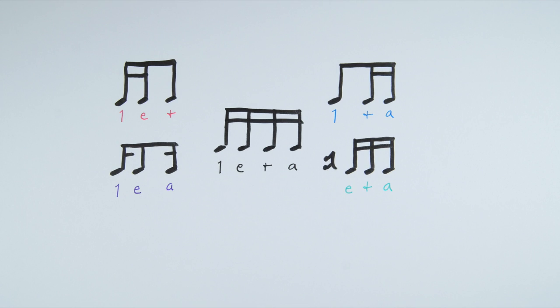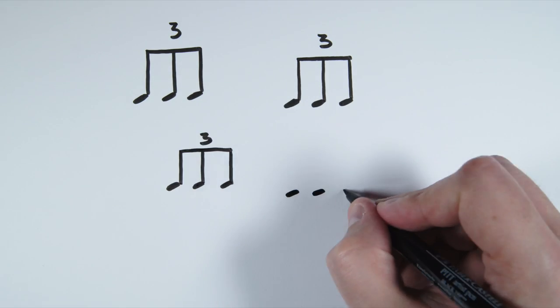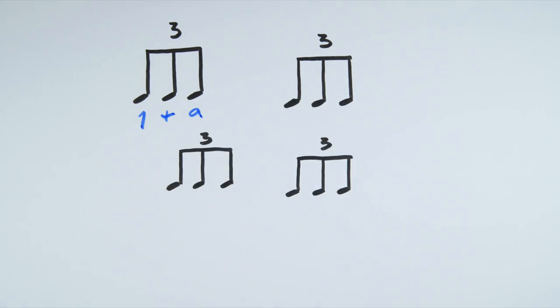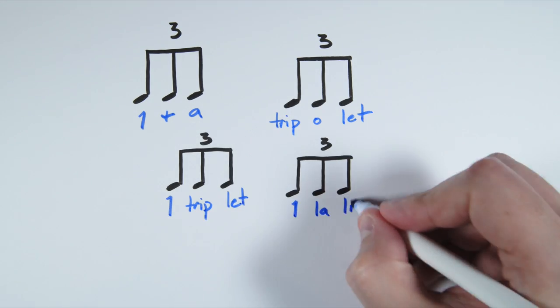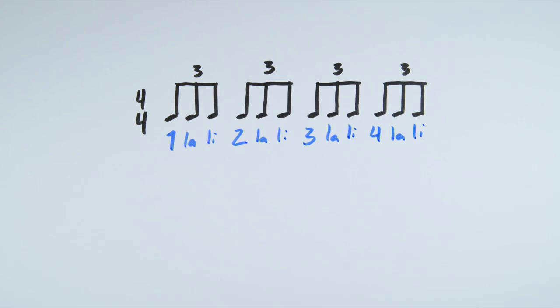Try mixing up these five rhythms to come up with your own counting exercises. Now let's look at counting triplets. Just like all the other counting we've just done, there are many ways to count triplets. Personally, I like to use lollies. So, a 4-4 measure of triplets would be counted like this: